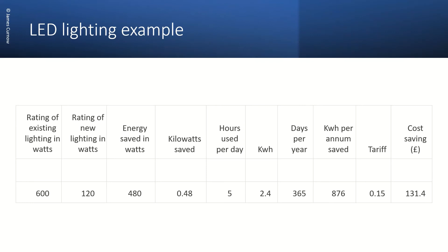So to recap: by multiplying the kilowatts saved by the hours used, we get the energy saving in kilowatt hours. And then by multiplying by the number of days and the tariff, we can calculate the saving per annum.